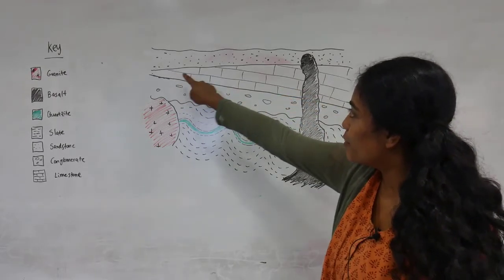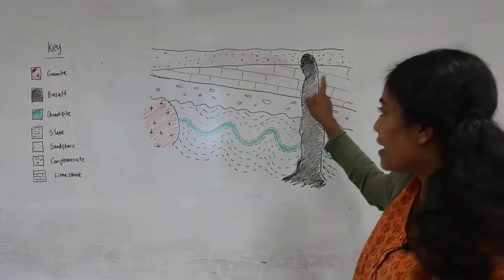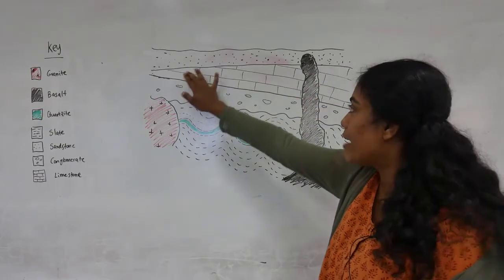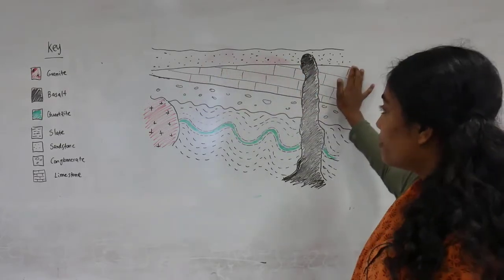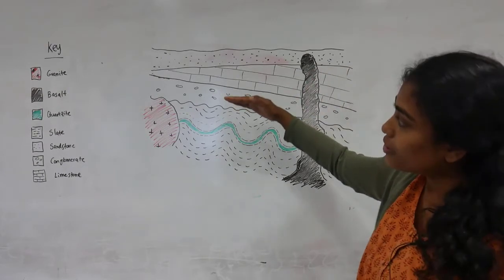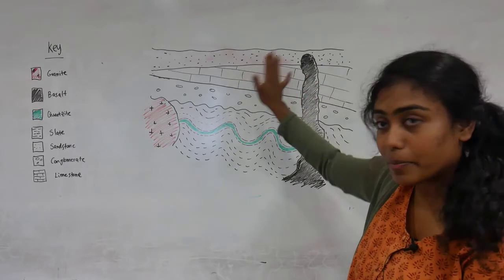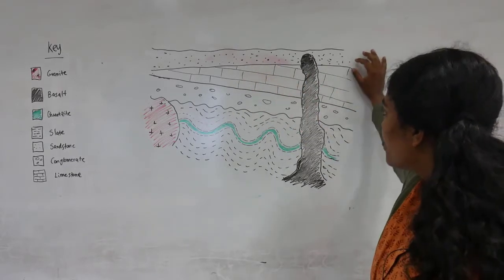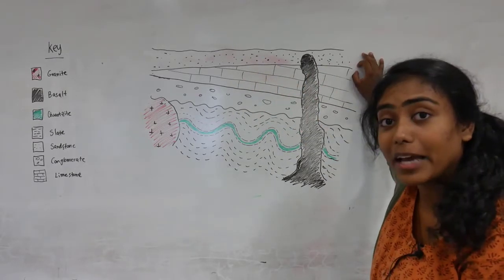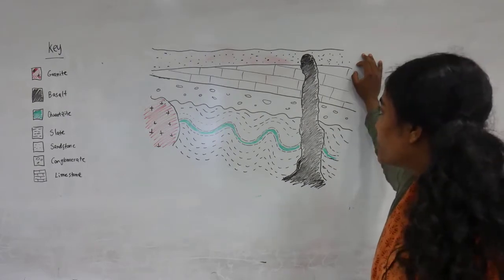Then it would have been eroded away to create another unconformity. So we have this surface where the tilt of the beds underneath it is different from above. That's another place where we have sediments being lost from the geological record.